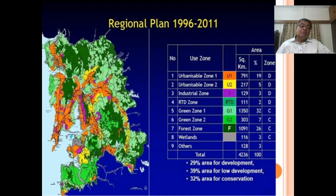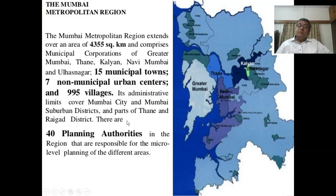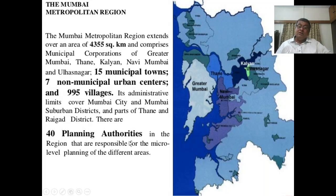This is the regional plan. The MMRDA — Mumbai Metropolitan Region — extends over an area of nearly 4,355 square kilometers and comprises the Municipal Corporations of Greater Mumbai, Thane, Kalyan, Navi Mumbai, and Ulhasnagar; 15 municipal towns; 7 non-municipal urban centers; and 995 villages. Its administrative limits cover Mumbai City and Mumbai Suburban districts and parts of Thane and Raigad districts. There are 40 planning authorities in the region responsible for micro-level planning.